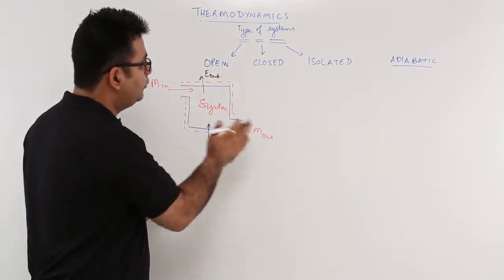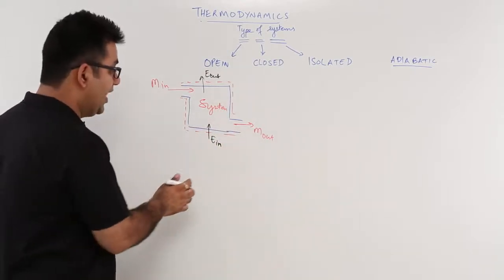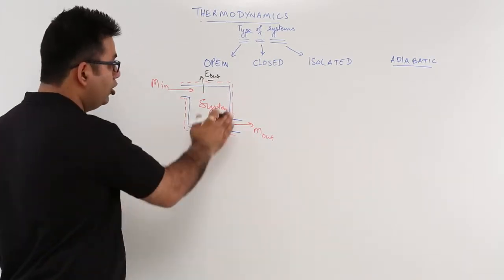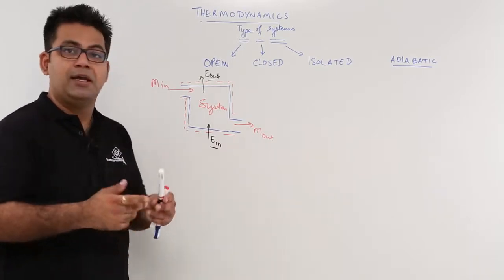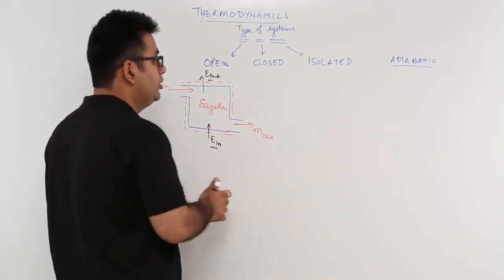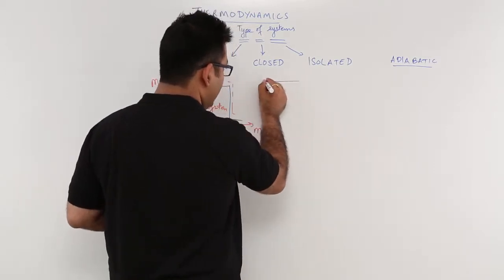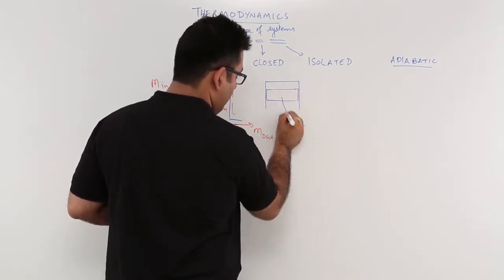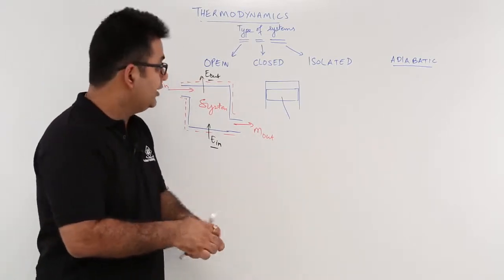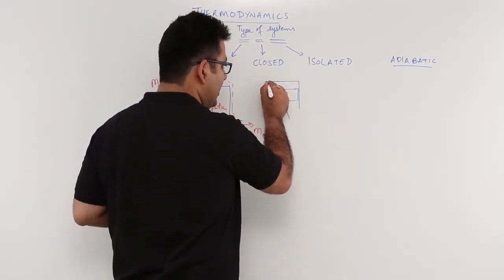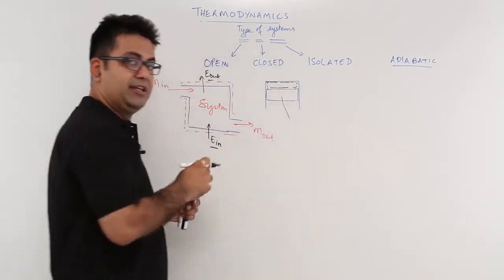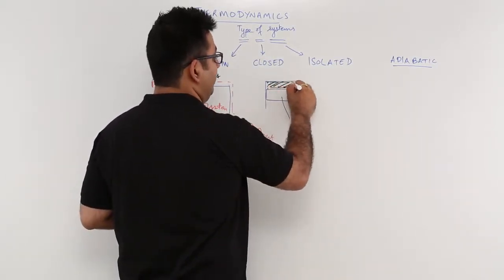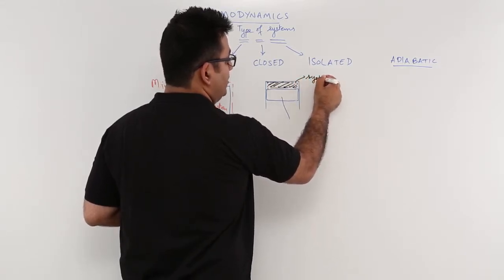So you have both mass and energy going in and out of the system — this becomes an open system. Now let us come to the closed system. In a closed system, energy interaction takes place to and from the system, but there is no mass inflow and outflow. For example, if you take a piston-cylinder arrangement — a rigid cylinder with a piston inside it — your system is the volume of gases entrapped inside the piston and cylinder arrangement, above the piston head and below the cylinder head. This is the system we are observing for thermodynamic study.